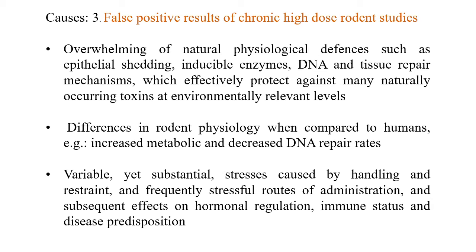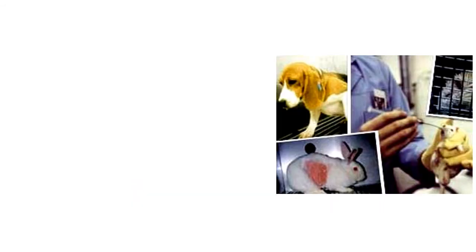Variable yet sustainable stresses caused by handling, restraint, and frequently stressful routes of administration affect hormonal regulation, immune status, and disease predisposition. For example, in chronic toxicity studies, the animal is fed a drug for around 90 to 92 days, which ultimately shows its impact on hormone regulation and disease predisposition. In this way, it may produce false positive or false negative results.